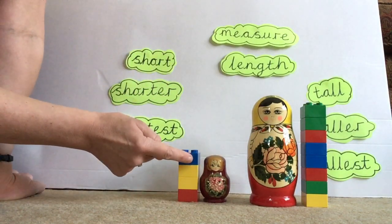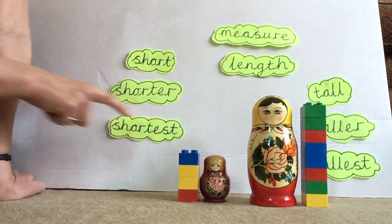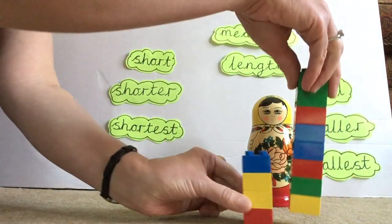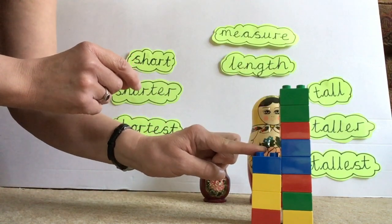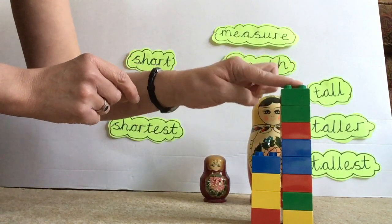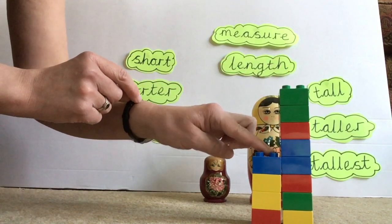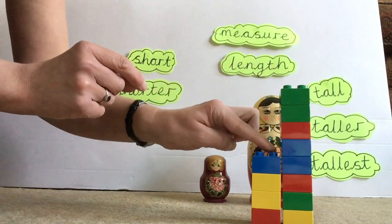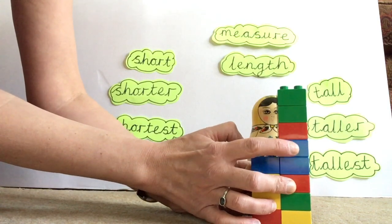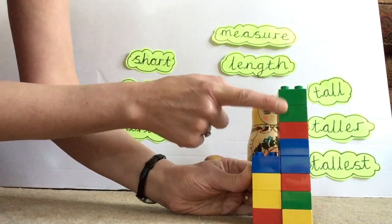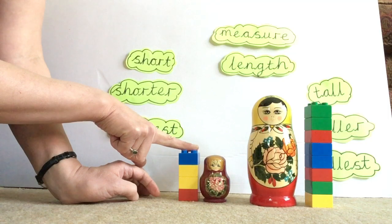So how many bricks tall is this Russian doll? Should we count and check? One, two, three, four. This Russian doll is four bricks tall. So if we take the towers, we can see that this tower is much taller than this one. This one's the same height as the tall Russian doll. This one's the same height as the short Russian doll. Let's see how many bricks taller this one is. So they're both the same up to here. But then there's one, two, three, four more bricks on this tower. So the Russian doll is four bricks taller than the short Russian doll.